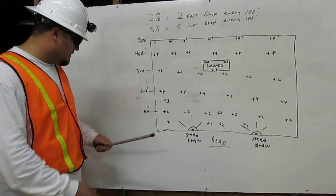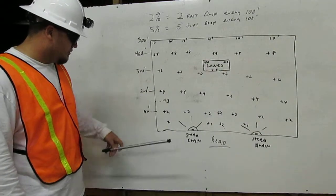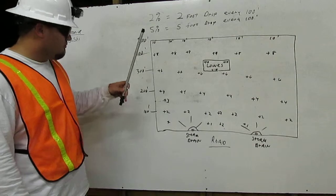So we're going to use 2%. So every 100 feet you need to have a plus 2 foot from your zero point. 200 feet, plus 4 feet from your zero point.